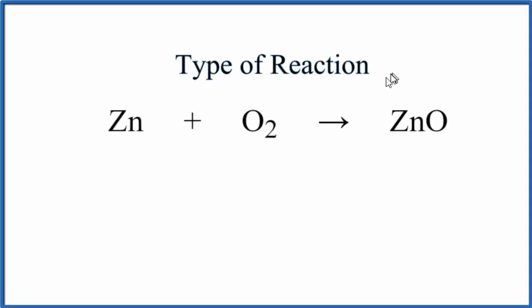In this video, we'll take a look at the type of reaction for Zn plus O2 yields ZnO. This is zinc plus oxygen gas, and this is zinc oxide.